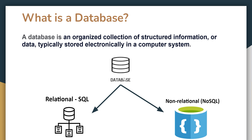Databases are of two types. One is relational, also called SQL databases, and the other is non-relational, also called NoSQL databases. Examples of SQL databases include Postgres, MySQL, Microsoft SQL, MariaDB, Oracle, etc.